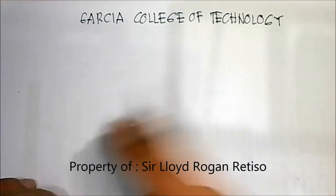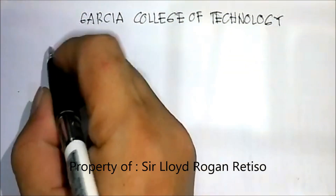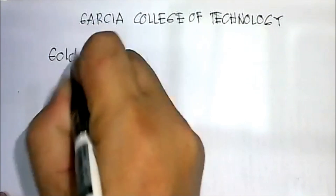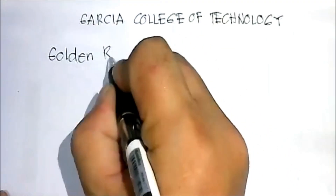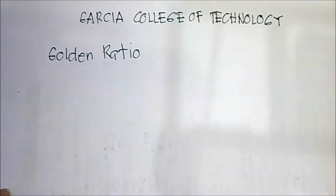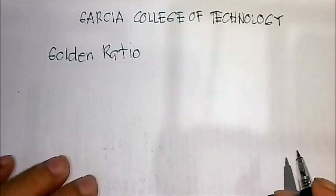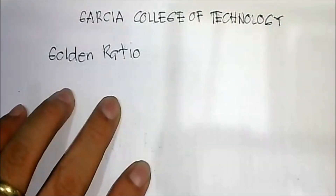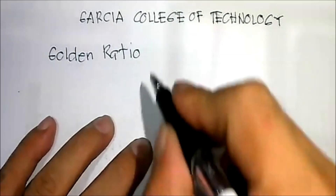Good day, everyone. We have here the topic: Golden Ratio — the Golden Ratio of the Fibonacci number sequence. Let's discuss the Golden Ratio and the ambiguities of the formula.